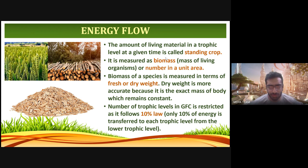The number of trophic levels in a grazing food chain is restricted as it follows the 10% law. Only 10% of energy is transferred to each trophic level from the lower trophic level.